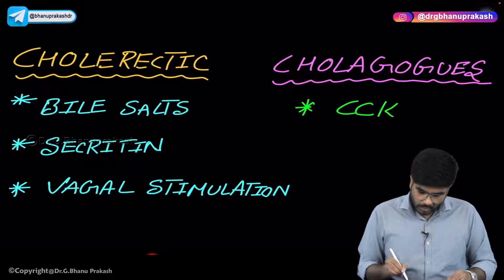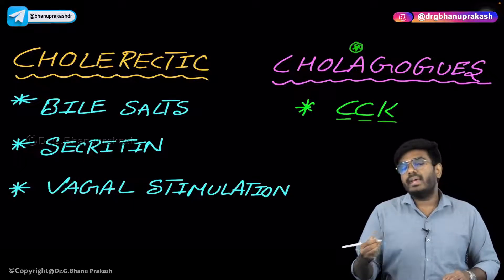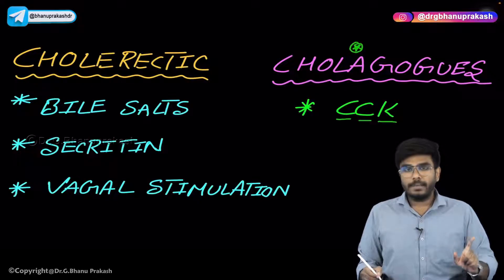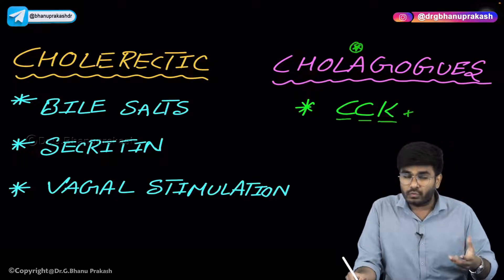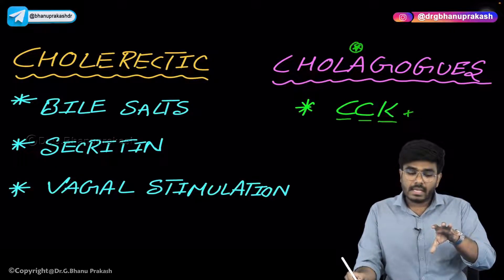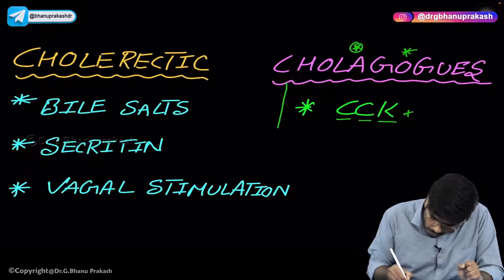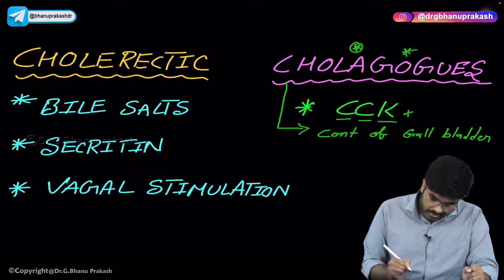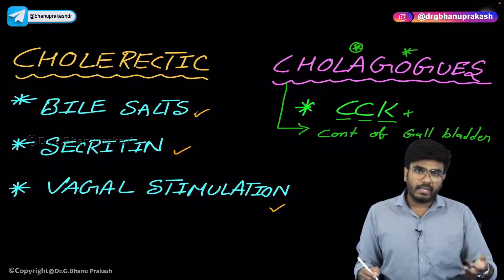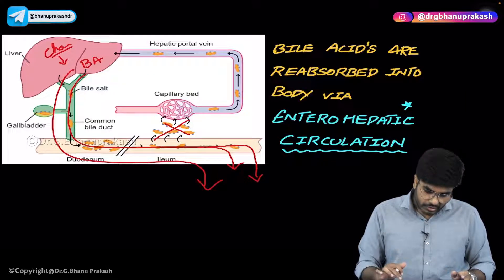Let's talk about what exactly a cholagogue and a cholerectic are. A cholagogue is cholecystokinin. Cholecystokinin comes from the I cells. The stimulus for release of cholecystokinin is fat-rich food. Whenever there is fat-rich food, cholecystokinin comes out of the I cells and causes contraction of the gallbladder. So a cholagogue is a substance which causes contraction of the gallbladder. A cholerectic, on the other hand, is a substance which helps in the production of bile and increases bile concentration. So: cholerectic = bile production; cholagogue = bile release.